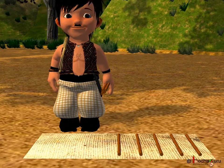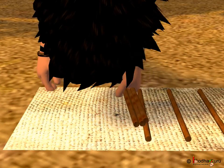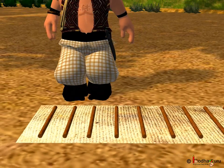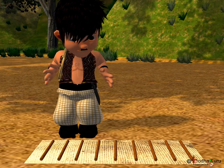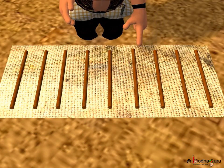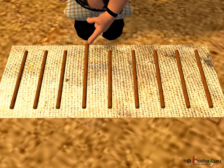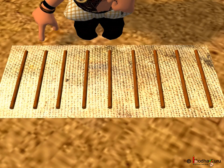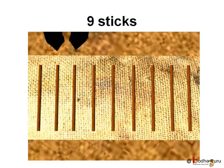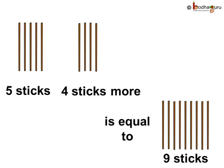Say he collected four more sticks. How many sticks does Bola have now? One, two, three, four, five, six, seven, eight, nine. Yes, nine sticks in total. So five sticks and four more sticks is equal to nine sticks.